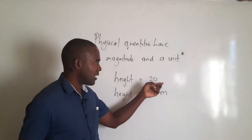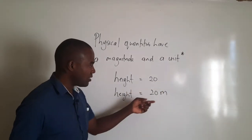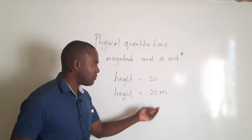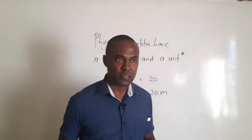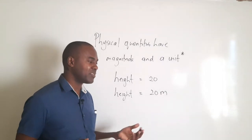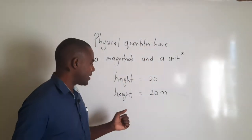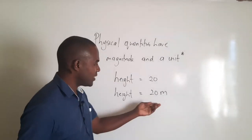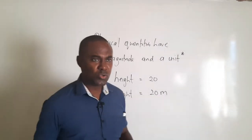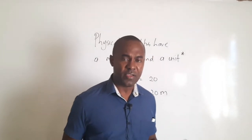Now let's say we go further and state the height as 20 meters. In the previous statement we had only a magnitude and no unit — the statement was incomplete. Now we include the unit. But does this statement make sense? Can a person realistically be 20 meters tall? No, it is not possible — at least not in our solar system. So by writing height equals 20 meters, we know this doesn't make sense. This shows the importance of stating both the magnitude and the unit of a physical quantity.